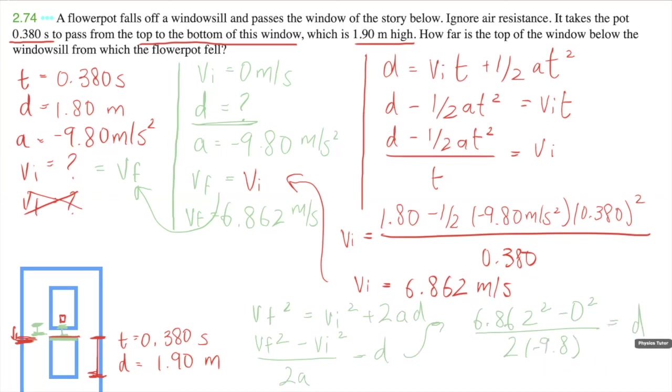2.4. And plugging it into my calculator, the d I'm getting is 2.4 meters, which is the distance from the top of the windowsill to the top of the window.